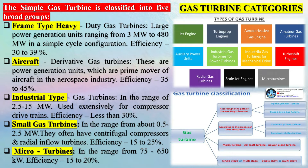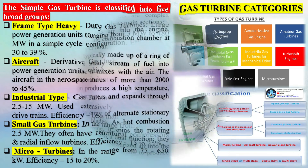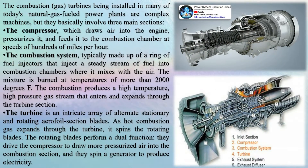The combustion produces a high-temperature, high-pressure gas stream that enters and expands through the turbine section. The turbine is an intricate array of alternate stationary and rotating aerofoil section blades. As hot combustion gas expands through the turbine, it spins the rotating blades, which drive the compressor to draw more pressurized air into the combustion section and spin a generator to produce electricity.